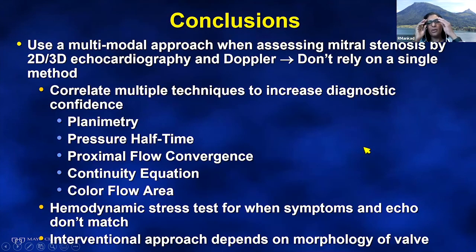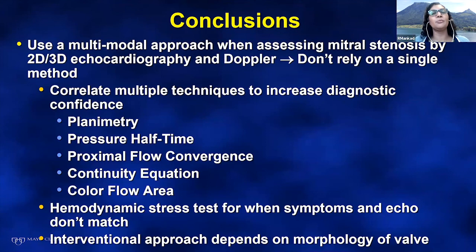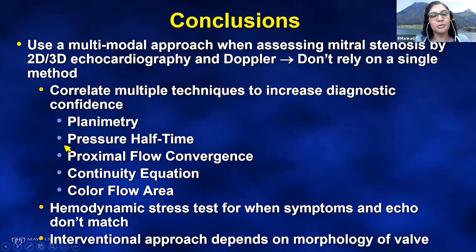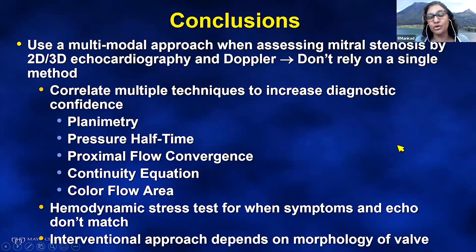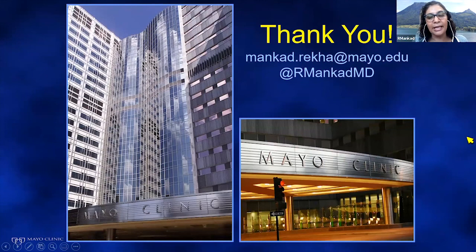In conclusion, remember that you need a multimodal approach to assessing mitral stenosis by echo — 2D imaging, 3D imaging, color, and Doppler. Don't rely on a single method. Planimetry and pressure half-time are the mainstays to assess severity, but there are other options. Have a low threshold for hemodynamic stress testing when symptoms and echo findings don't match. Really describe the morphology of that valve and how much mitral regurgitation as well, as this dictates your interventional approach — whether percutaneous or surgical. Good luck to those taking the boards.